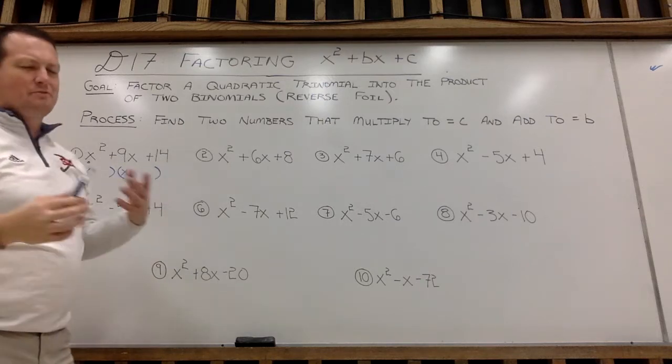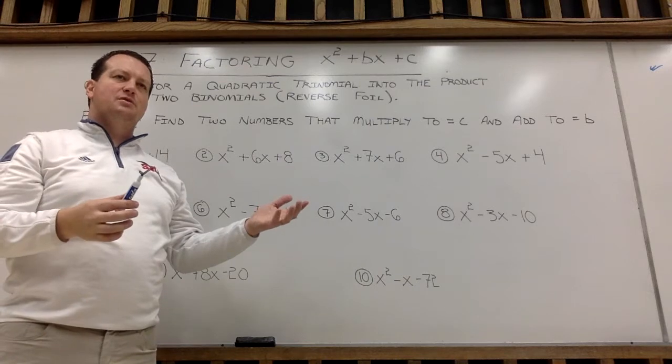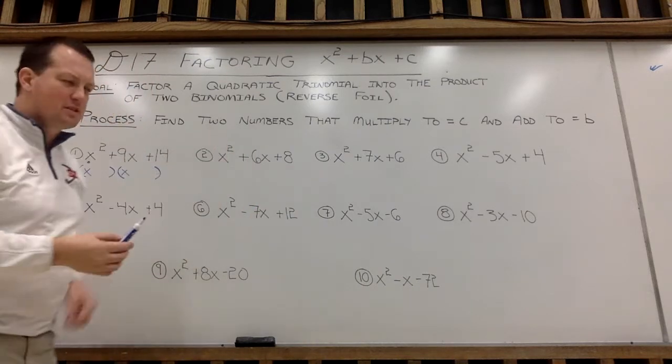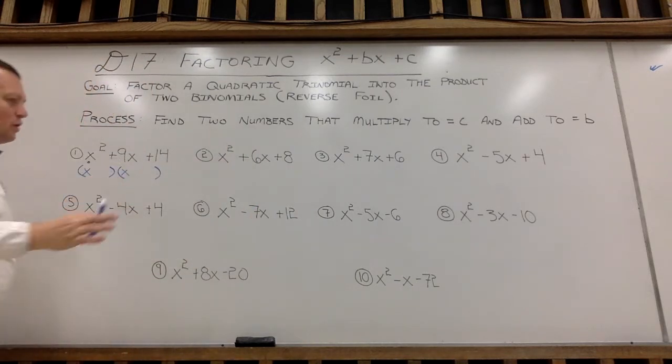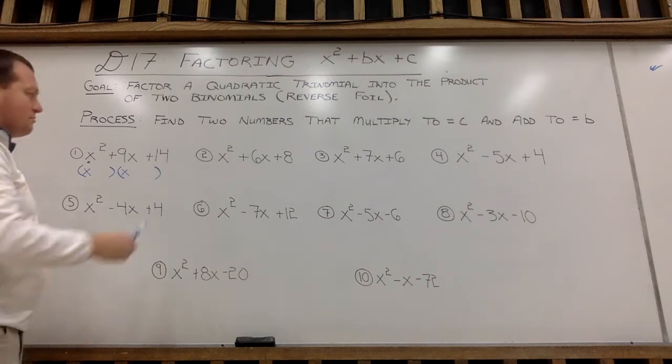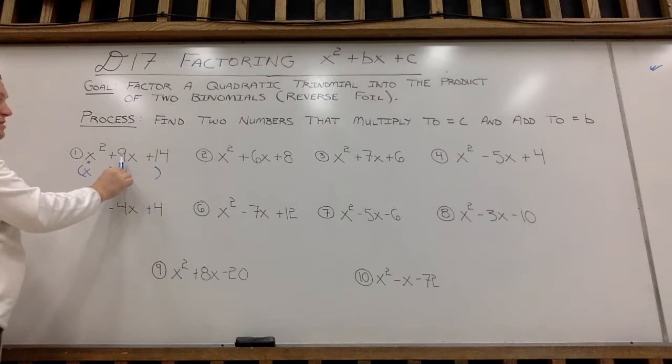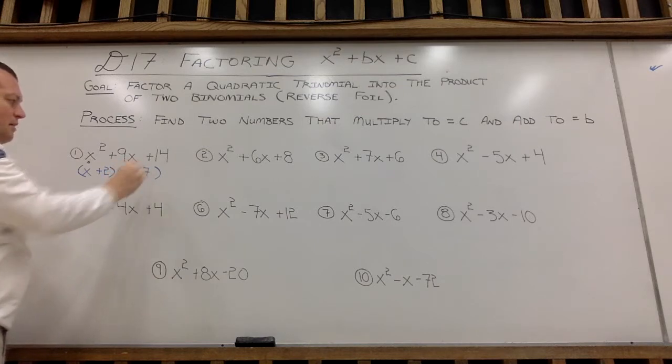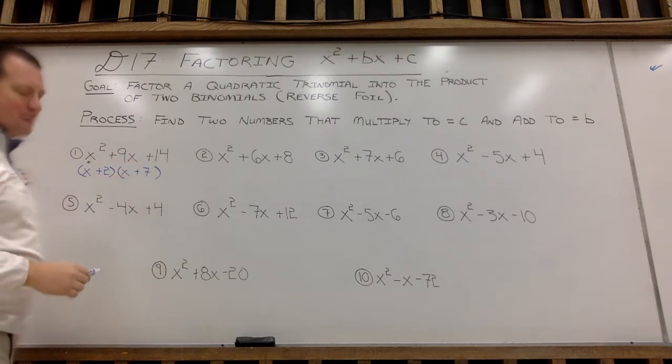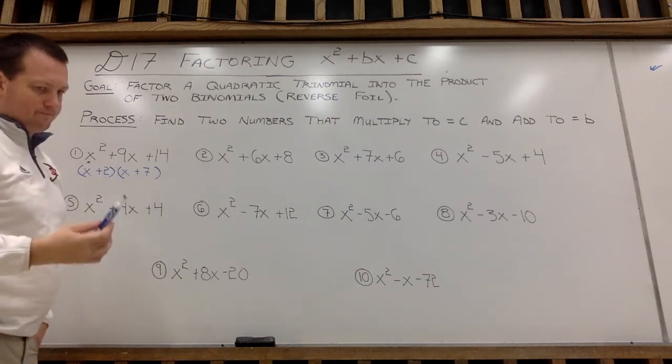The other prerequisite or requirement is that the two factors need to add to equal the b value, the middle number. So in this case, I want to figure out what numerical values multiply to make 14, and then add to make 9. So we said 1 and 14, 1 times 14 is 14. Does 1 plus 14 equal 9? No, it doesn't. Hopefully 2 and 7 works. 2 times 7 is 14. And yes, 2 plus 7 is 9. So I am going to use positive 2 and positive 7. Now, order does not matter. I could go x plus 7 and x plus 2. No problem.